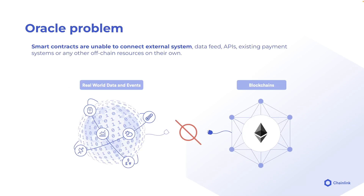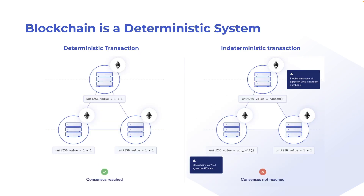As I mentioned, Oracle or Chainlink is infrastructure to help move data from the off-chain world to the on-chain smart contract. You may wonder: why are smart contracts unable to just get data by themselves? The root reason is that the blockchain is a deterministic system, and it can only execute deterministic transactions.